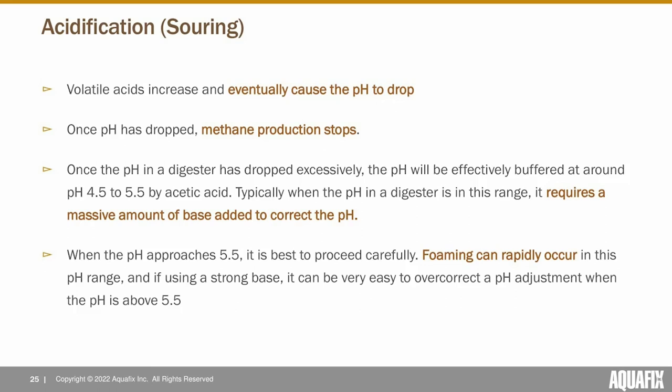If you address pH adjustments early, like when you're at around pH 6.5, you don't need a lot of alkalinity supplement to maintain a stable digester. But if you let the pH drop to the 4.5 to 5.5 range, you're encountering a buffered region where it is very difficult to adjust the pH — it can take tens to hundreds of times the amount of pH adjuster like magnesium hydroxide to raise the pH back to a healthy range. You can run a titration — found on our Aquafix website on the Boost and Lock page — to get a better sense of how much pH additive you need.